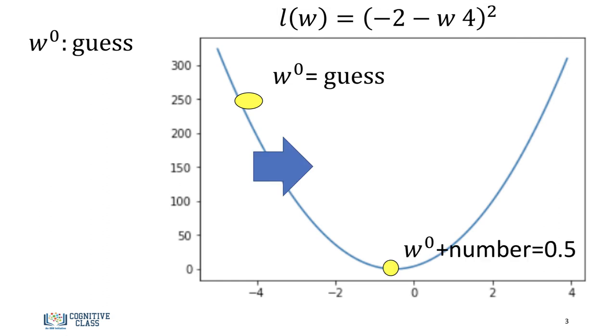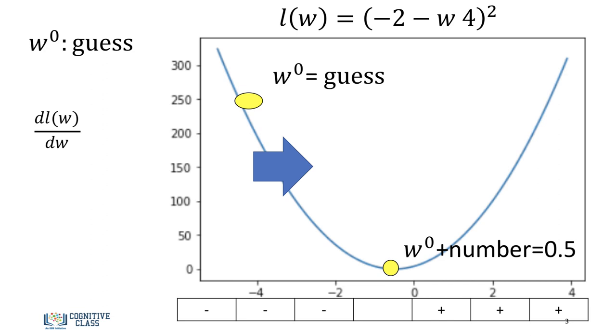We can do this by adding a small positive number to the parameter value. Examining the sign of the derivative, we see it's the opposite of the sign of the number we would like to add. Therefore, we can simply add a number proportional to the negative of the slope or derivative.